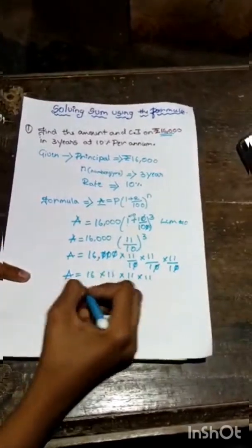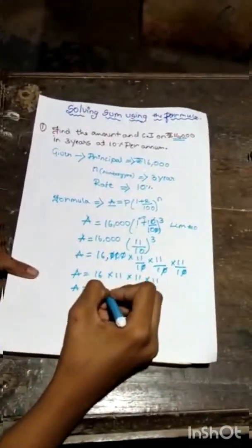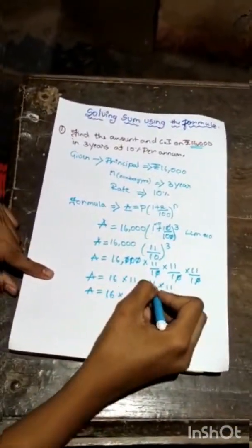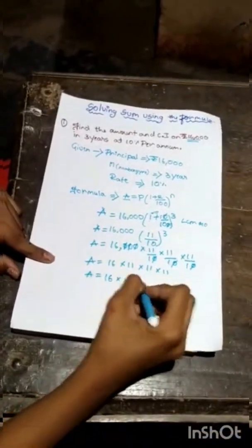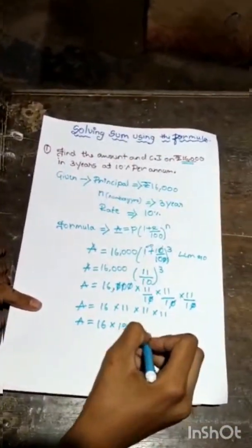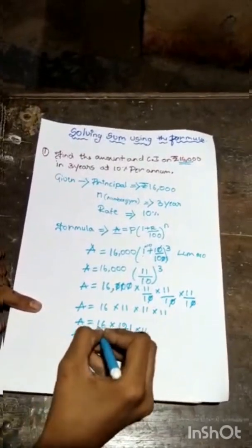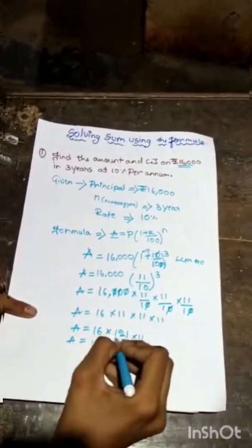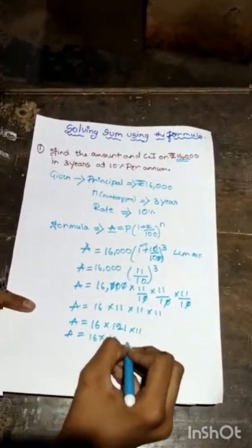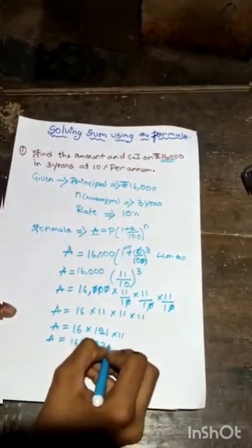First, we'll multiply all the 11s. 11 into 11 is 121. Then 121 into 11. 16 into 121 into 11 is 1331.